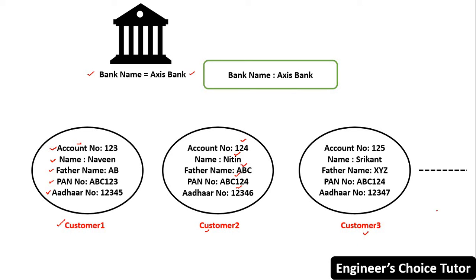Similarly for customer three, and we can have lakhs of customers in the bank named Access Bank. That's why these attributes — account number, name, father name, PAN number, Aadhaar number — should be declared as instance variables or object-level variables.